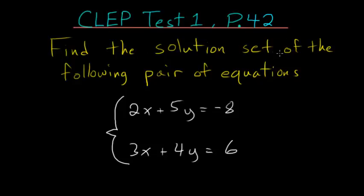Find the solution set of the following pair of equations: 2x plus 5y equals negative 8 and 3x plus 4y equals 6.